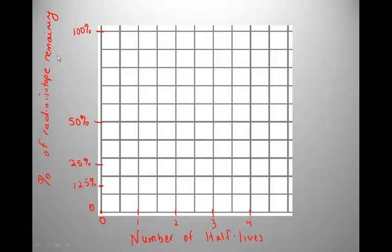Just for the sake of making this easier to understand, let's talk about carbon-14. Carbon-14 has a half-life of 5,730 years — that would be this distance on the graph, one half-life. At time zero, we had 100% of the carbon-14 present. After one half-life, there was 50% present. After two half-lives, 50% of 50%, which is 25%. After another half-life, we had half of the 25% present.